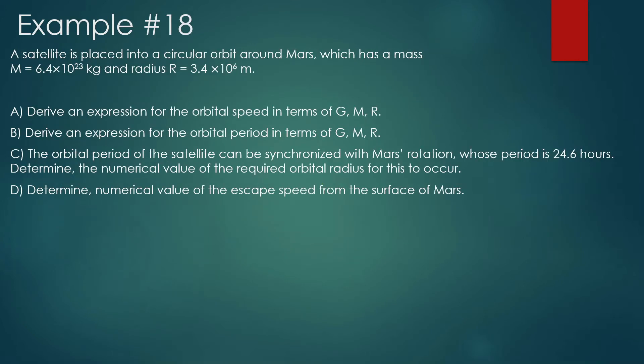A satellite is placed into a circular orbit around Mars, which has a mass of 6.4 times 10 to the 23 kilograms and a radius of 3.4 times 10 to the 6 meters. Part A: derive an expression for the orbital speed in terms of G, M, and capital R. This is very similar to what we just did.